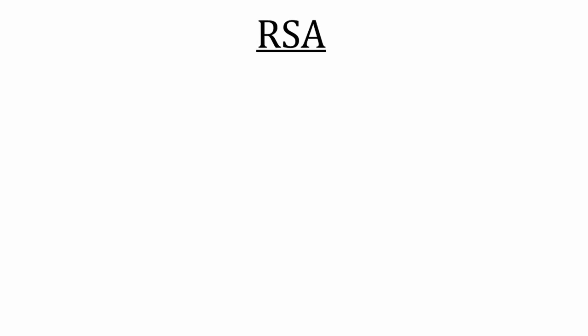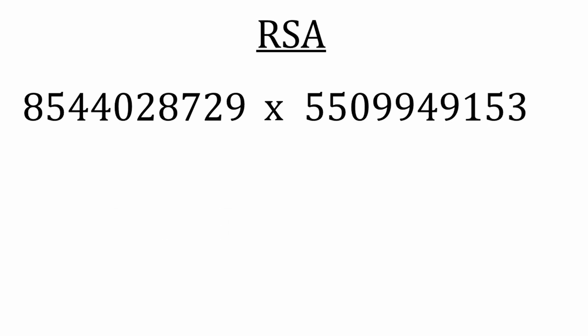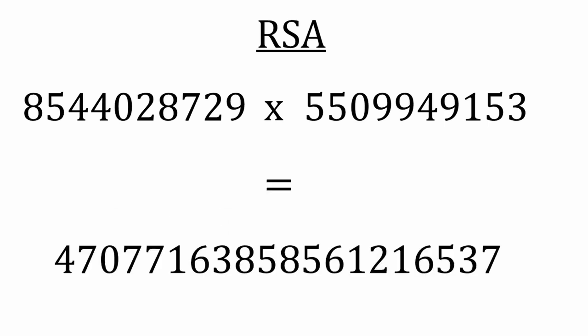RSA relies on the problem of prime factorization. To generate the keys, Bob picks two prime numbers which make up his private key. He then multiplies them together — this becomes the public key. If the two prime numbers were 2 and 5, it isn't very hard to find the prime factors of 10 and work out the private key. But if Bob chooses two very large prime numbers and multiplies them together to form the public key, it is a very difficult task to factorize the astronomically large number to get the two primes back out. For current computers, finding the prime factors of such a large number couldn't even be done in hundreds of thousands of years — checking billions of combinations is simply impractical.